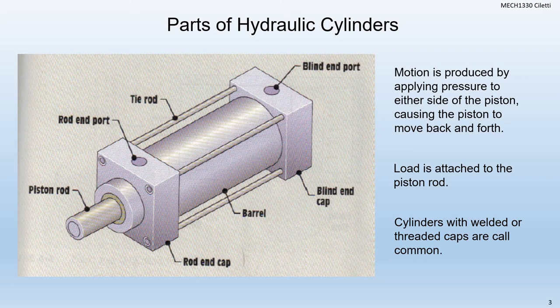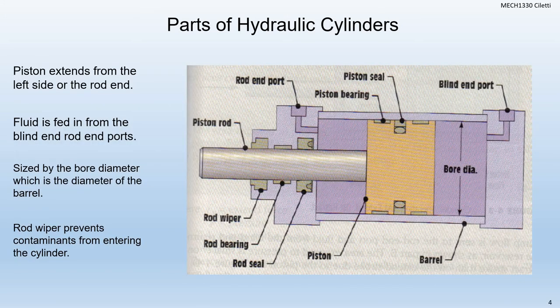We've got the blind end, the rod end, the piston rod, and the barrel. We call it the blind end because it's not the end that has something coming in or out of it. We use motion produced by either applying fluid inside the blind end port to extend the piston, or we put fluid inside the rod end port to retract the piston, and we use that to make it go back and forth. We attach the load to the rod on the piston rod. We can use that to lift loads or push loads. Cylinders have welded or threaded caps.